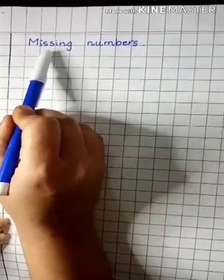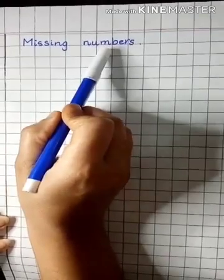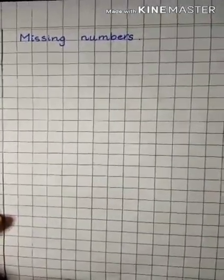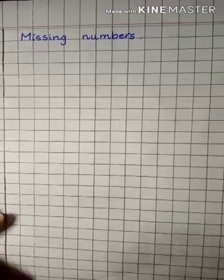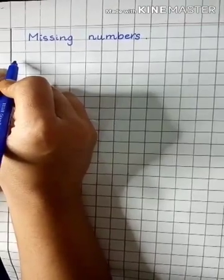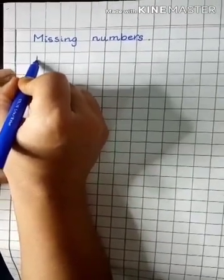Then you will write down the headline missing numbers. After writing the headline, near the margin line leave one block and then write one.